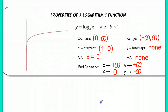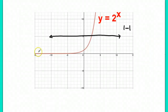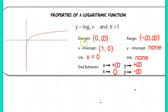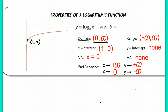Looking at the properties of our log function: its domain is all positive values. That's because the range of the original exponential function is all positive values, so when we go to the inverse, the domain becomes all positives. The range of the log function is all reals — it switches, the exact opposite of the exponential function. We have an x-intercept at (1, 0), which makes sense since the y-intercept of the exponential was (0, 1). There is no y-intercept because there's a vertical asymptote at x equals 0, and there is no horizontal asymptote.